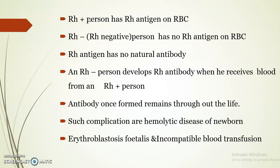An Rh positive person has Rh antigen on the surface of their RBCs; in an Rh negative person, Rh antigen is absent. Rh antigen has no natural antibodies, but an Rh negative person sensitized with Rh positive antigen can develop Rh antibodies. Once formed, these antibodies remain throughout life and result in complications such as hemolytic disease of the newborn — erythroblastosis fetalis — and incompatible blood transfusion.